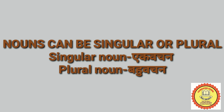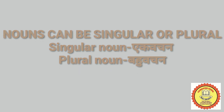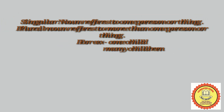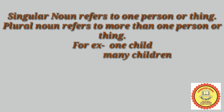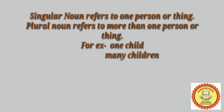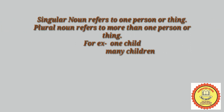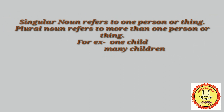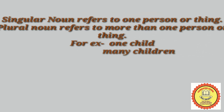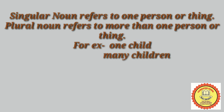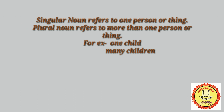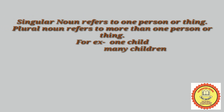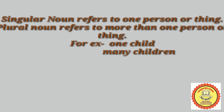Vachan is of two kinds: ek vachan (singular) and bahu vachan (plural). A singular noun refers to one person or thing, while a plural noun refers to more than one person or thing. For example, one child, many children.